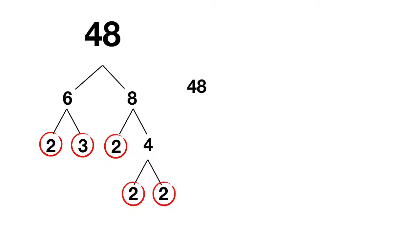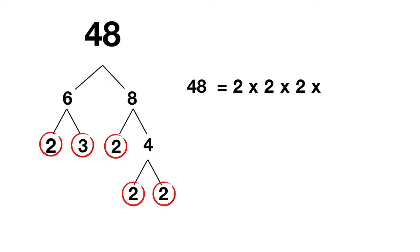So 48 is equal to 2 times 2 times 2 times 2 times 3. But this is a messy way of writing this. Notice how we are repeatedly multiplying 2, and remember that repeated multiplication can be shown with exponents.